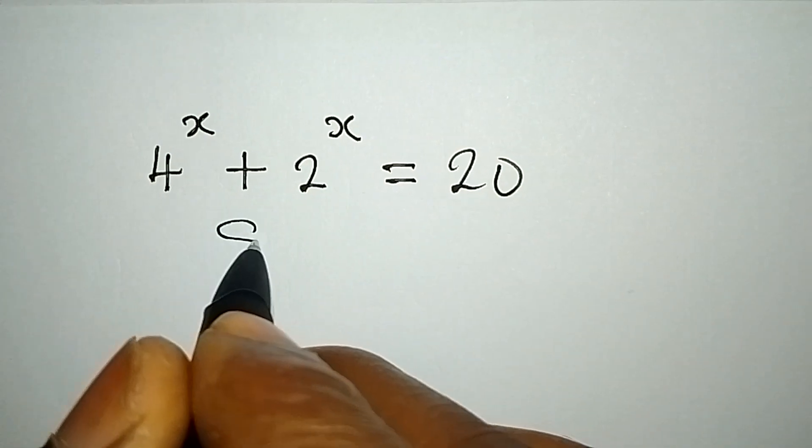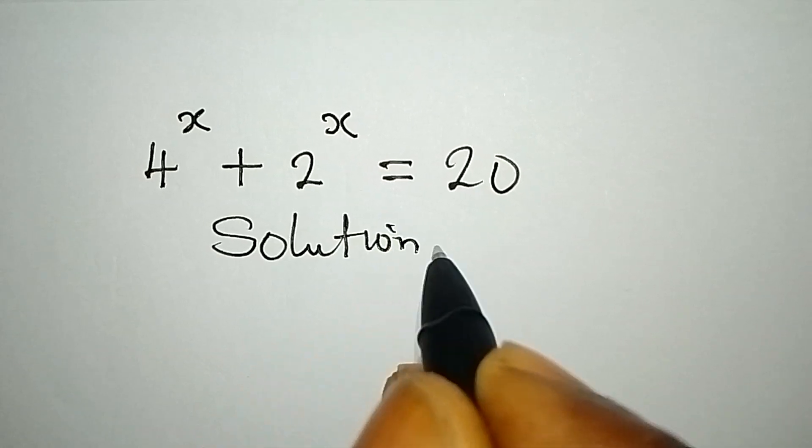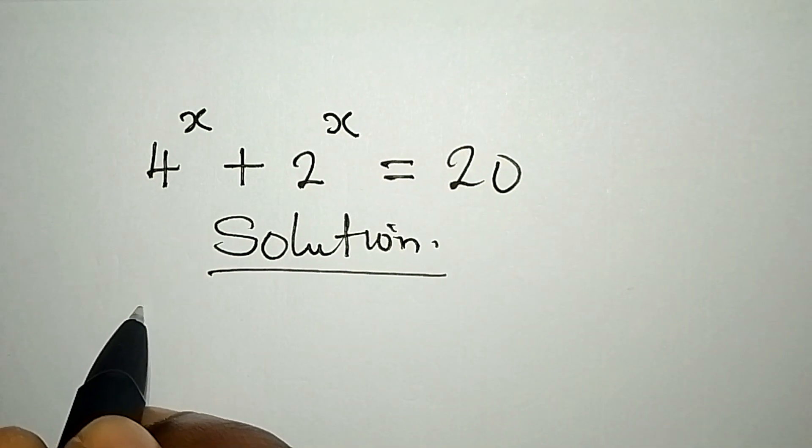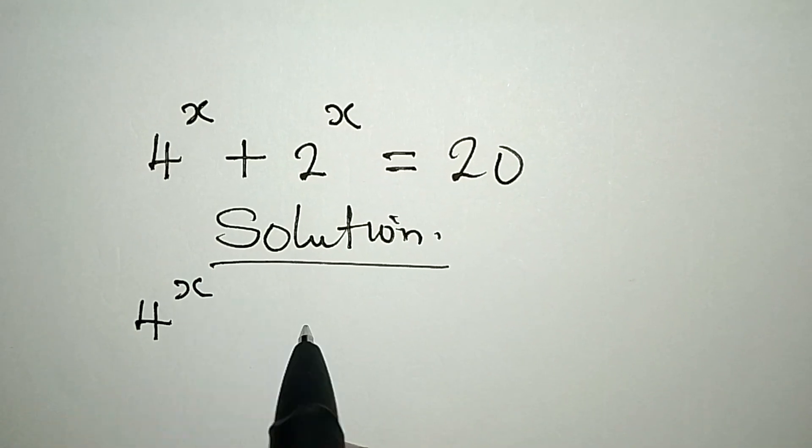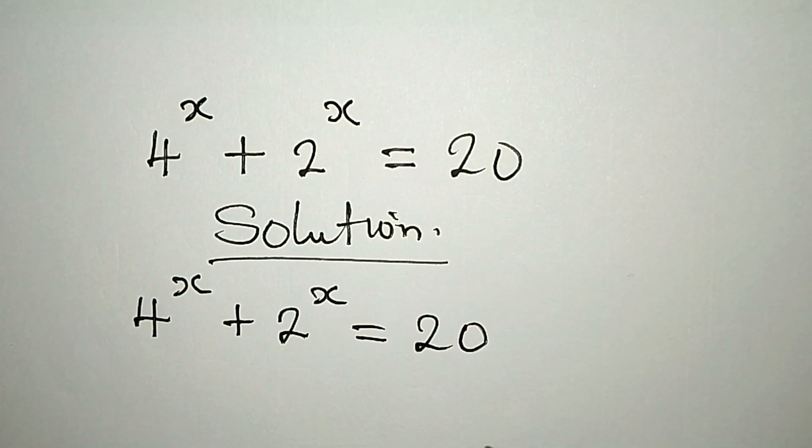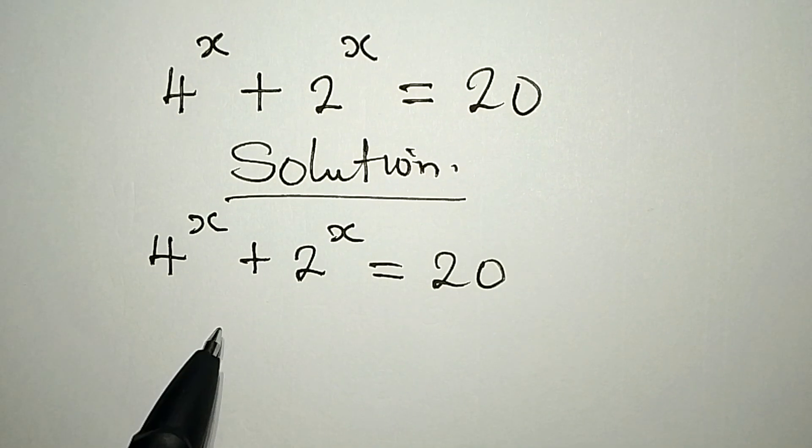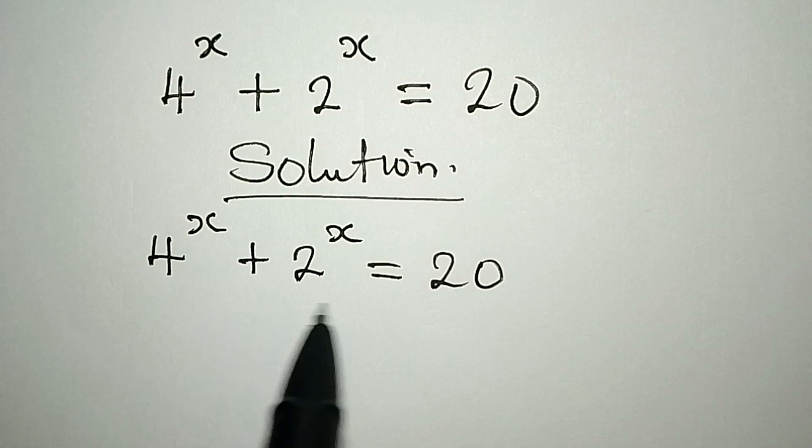Hello everyone, let's provide the solution to this: 4 to the power of x plus 2 to the power of x equals 20. How do we deal with this? Are we going to have 6 to the power of x equals 20?